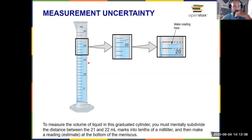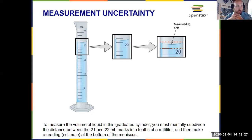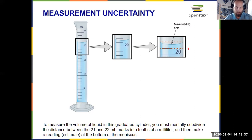Measuring from the meniscus — which you always will in chemistry — I can see something between 21 and 22 milliliters. For the digit of uncertainty, I go one more place. Because I know the ones digit for sure, I estimate to the tenths. So I might say this is 21.5, 21.6, or 21.7 — any of those would be acceptable readings, because that last digit is what we estimated. That's our digit of uncertainty.